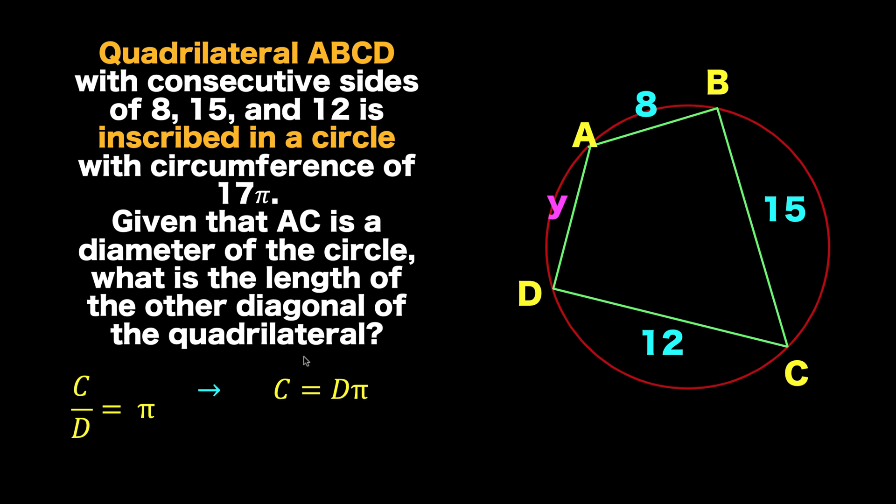And since it's also given that this side AC is the diameter of the circle, then we know that the length of the diameter AC is 17 units, which is this 17 here.